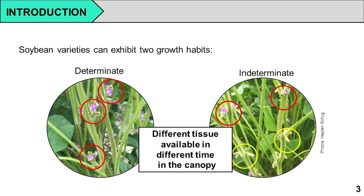With a determinate growth habit, varieties terminate vegetative growth once they start entering reproductive stages, when they're flowering. An indeterminate growth habit will continue some vegetative growth once it starts flowering. From an insect perspective, you have different tissues available to eat — more different kinds of tissues available with indeterminate growth habit than with determinate.